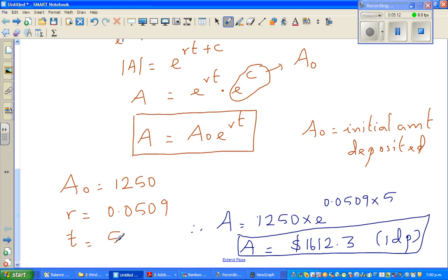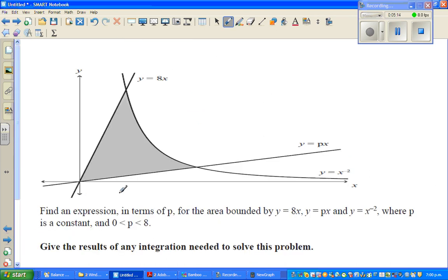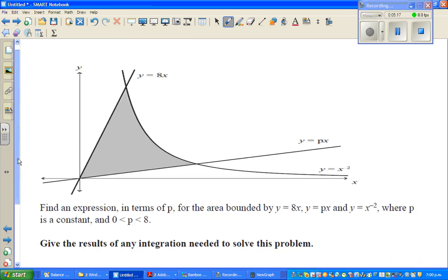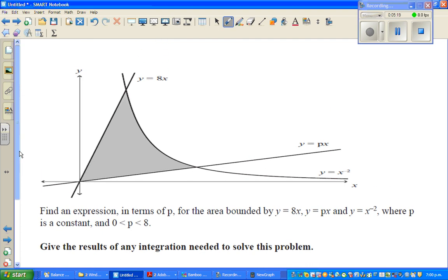Hopefully this video has been helpful. I want to do one more video on this. The question is: find an expression in terms of p for the area bounded by y = 8x, y = px, and y = x^(-2) or y = 1/x², where p is a constant and 0 < p < 8. You want to find this shaded area in terms of p.